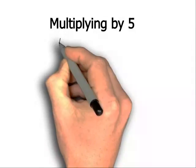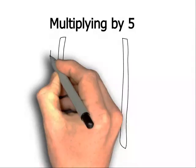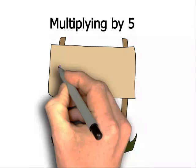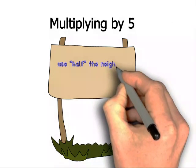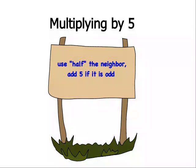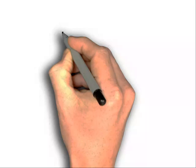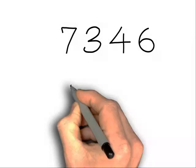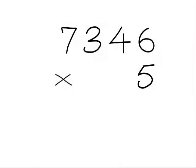Multiplying by 5. The rule for multiplying by 5 is: use half the neighbour and add 5 if the number is odd. Let's have a look at an example — 7,346 times 5.